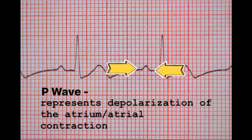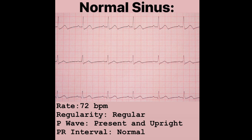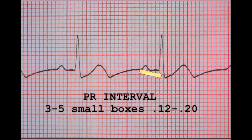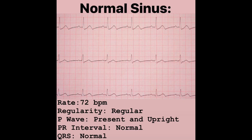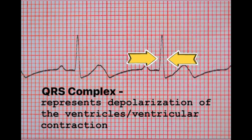Rate, regularity, and P wave are all taken care of. The next thing on our list is the PR interval. The PR interval is 3 to 5 small boxes, meaning 0.12 to 0.20 seconds long. You pull out your ruler and make sure that it marches out. We've established that the rate's normal, the rhythm is regular, the P wave is present and upright, and the PR interval is normal. The last thing to check is your QRS — the normal duration will be 3 small boxes or less, and it appears to be a normal QRS.